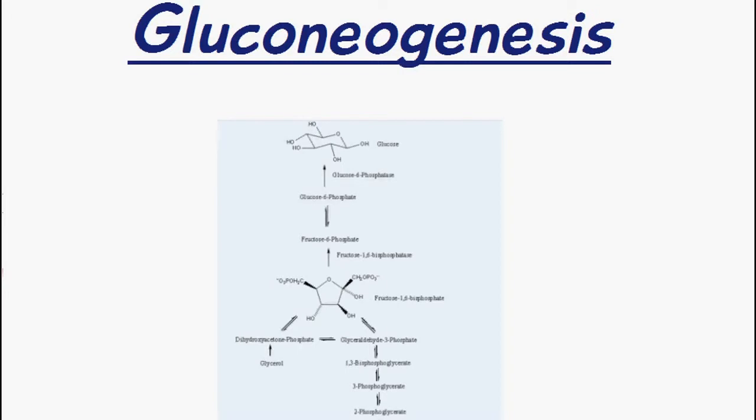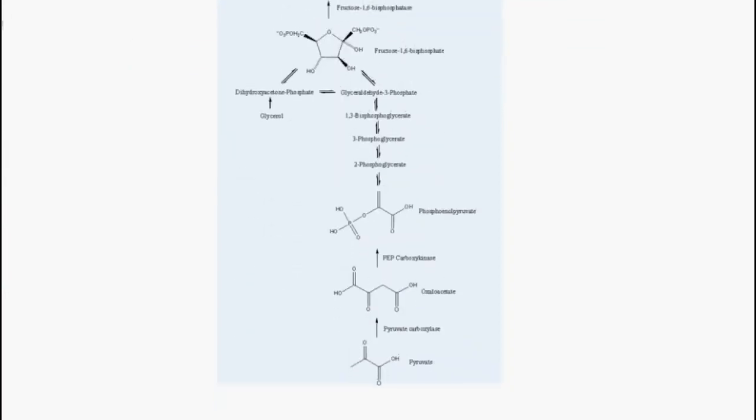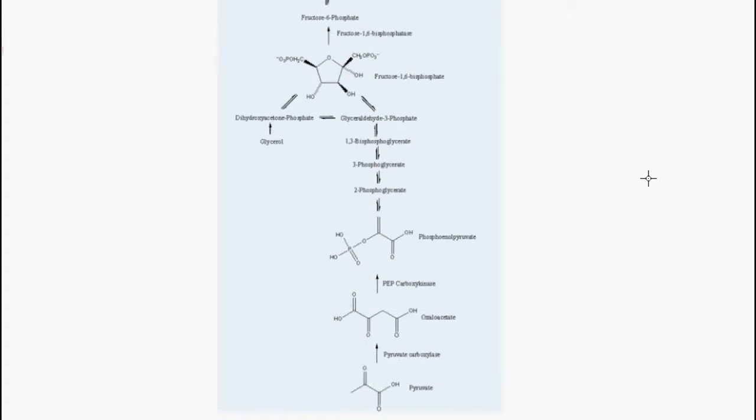They were amino acids, lactate, and glycerol. The products of these substrates enter the gluconeogenesis pathway at different stages. So amino acids form oxaloacetates which enter at this point here, and glycerol forms dihydroxyacetone phosphate which can enter at this point here.